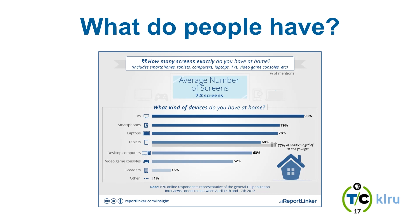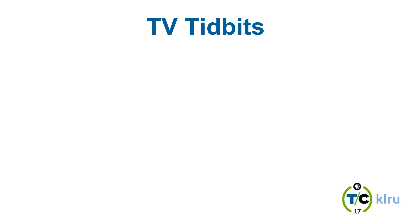The average number of screens in a house is 7.3 — a mix of TVs, smartphones, laptops, tablets, desktop computers, and video game consoles. Some of those don't have screens, so they're aggregating two types of devices. This is actually a good example of why you have to look at all the data, not just parts of it, because different studies capture things differently. Depending on the questions asked, an audience member may answer yes or no to the same question across different studies.